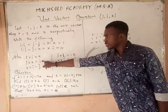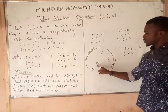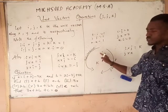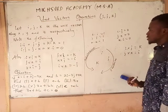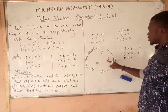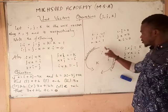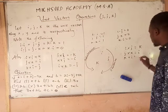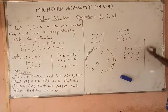Then, j cross k: we have j, we cross with k, and the next one we meet is i. The most important thing is that we move in the clockwise direction, so the result we get here will be positive i. Then the next one we have is k cross i: the next one we get here will be j, and we are still moving in the clockwise direction. So k cross i gives us positive j.